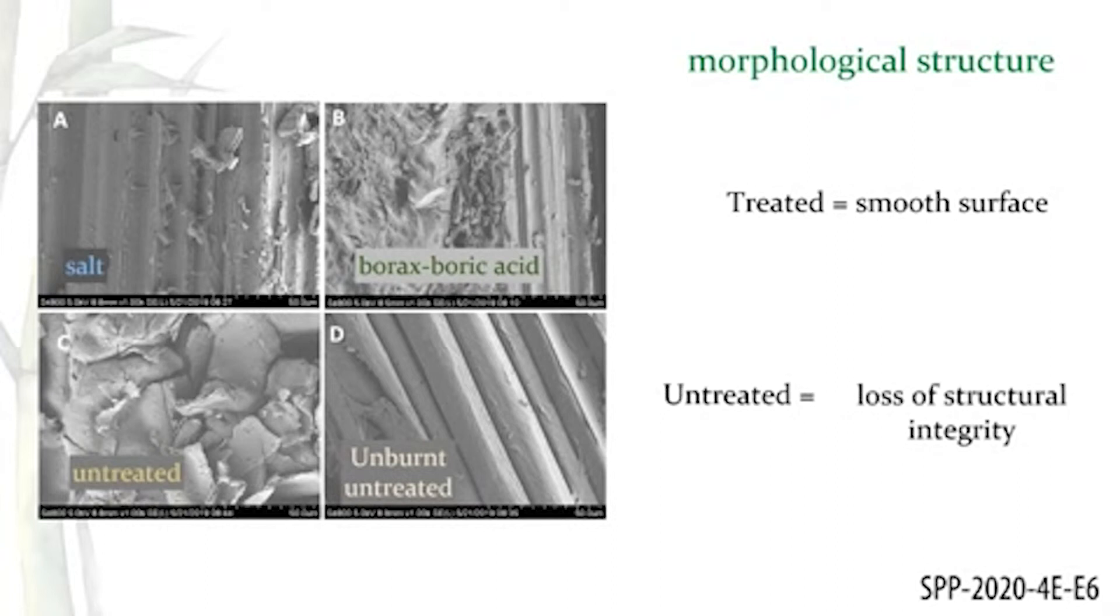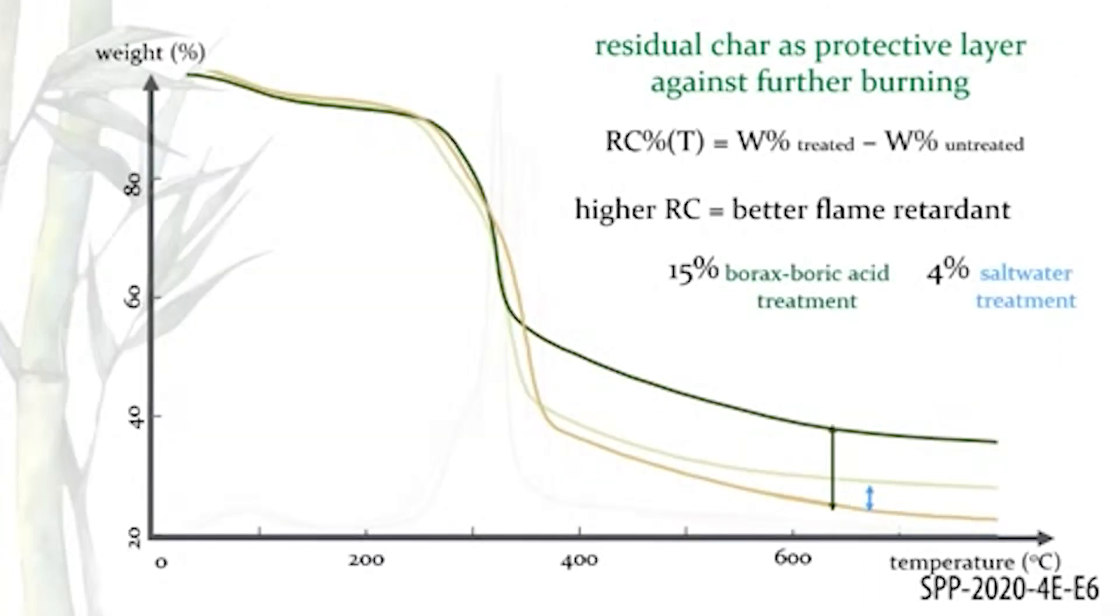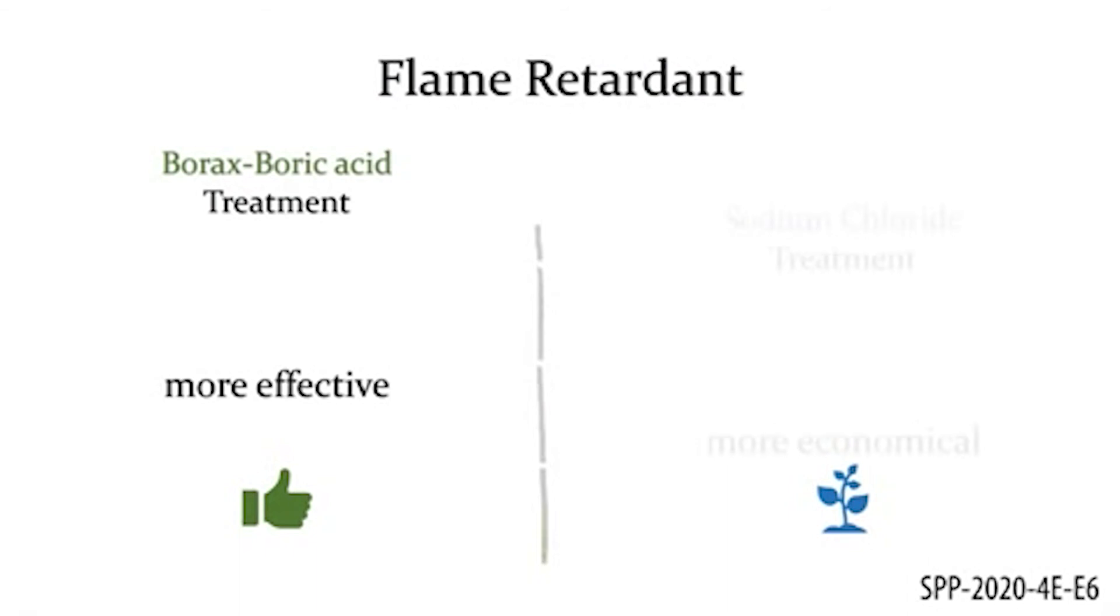SEM images show that the integrity of treated bamboo fibers was retained after being heated to 320 degrees Celsius. To quantify the flame retardancy of the samples, we calculated the residual char using weight loss values from TGA data. The higher the residual char value is, the better the flame retardancy. And this is apparent in the residual char calculated for borax boric acid treated bamboo. Still, salt water treatment is a viable alternative because it is safer and more economical.